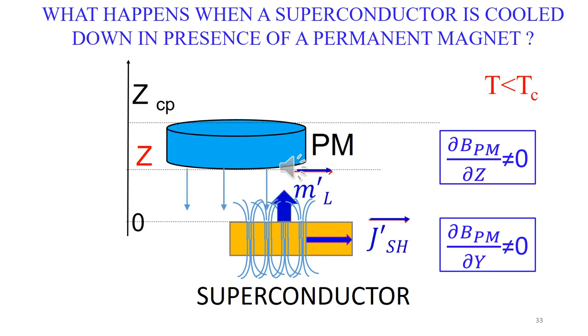If there is a lateral motion of the magnet with respect to the superconductor, the vortex distribution, the shielding currents, and the associated magnetic moment changes.